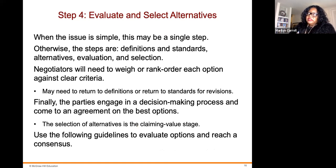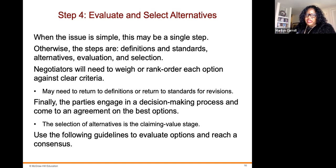Step four is evaluating and selecting alternatives. When the issue is simple, this may be a single step; otherwise the steps are definitions and standards, alternatives, and evaluation and selection. Negotiators need to weigh or rank-order each option against clear criteria. They may need to return to definitions or standards for revisions. Finally the parties engage in a decision-making process and come to an agreement on the best options. The selection of alternatives is the claiming value stage.